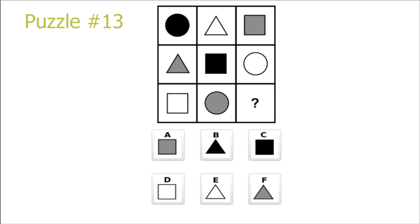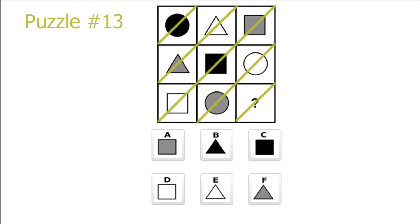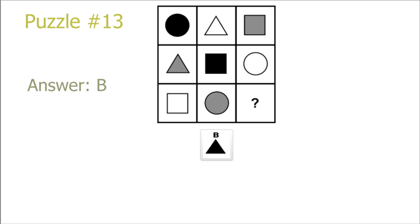Puzzle 13. If we look at the diagonal from the top left to the bottom right, we see that the colors are repeating. So we have a black picture as our answer. Also, if we look from the top right to the bottom left diagonal, the shapes are repeating every 3 diagonals. After circle comes triangle, so we have a black triangle as our answer.